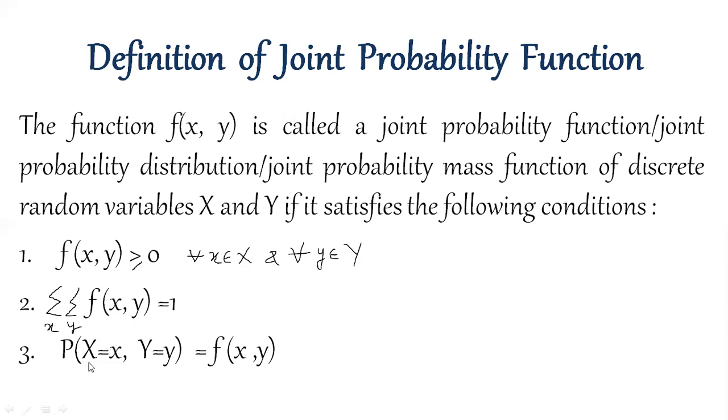And the third one is just the notation that probability x equals x and y equals y is denoted by f(x,y). We have seen the meaning of this in the previous lecture, so you don't need to worry about this. This is not a new thing. You just need to keep these two things in mind, that whatever variable we take, we need all the values non-negative corresponding to each and every pair of x and y, and all the probabilities sum corresponding to each and every value of x and y should be 1.